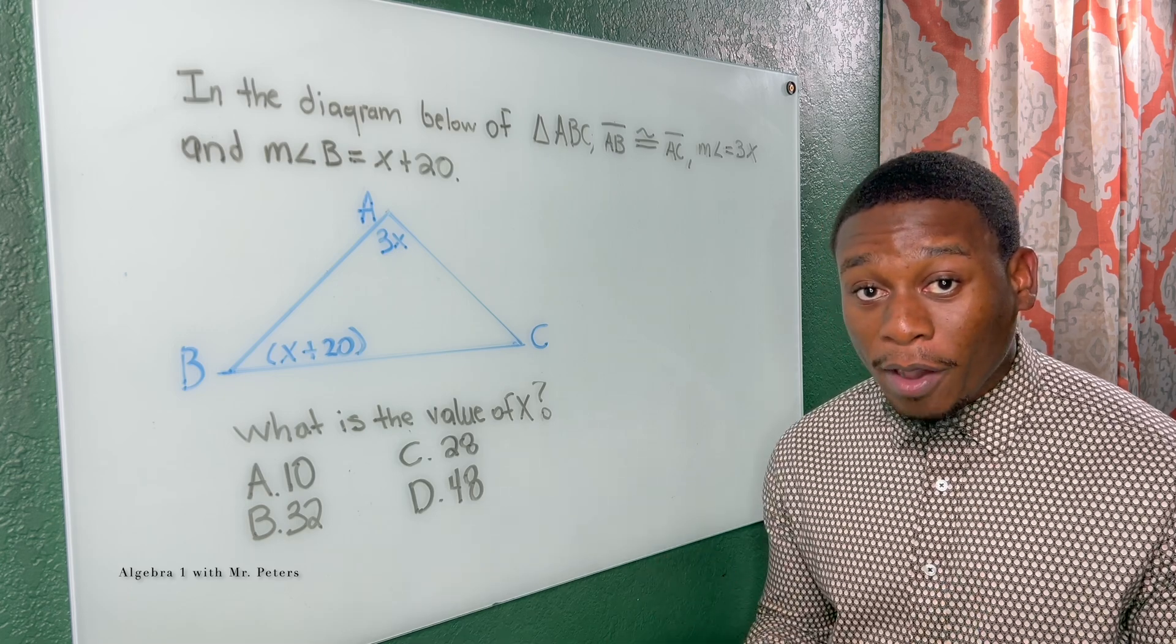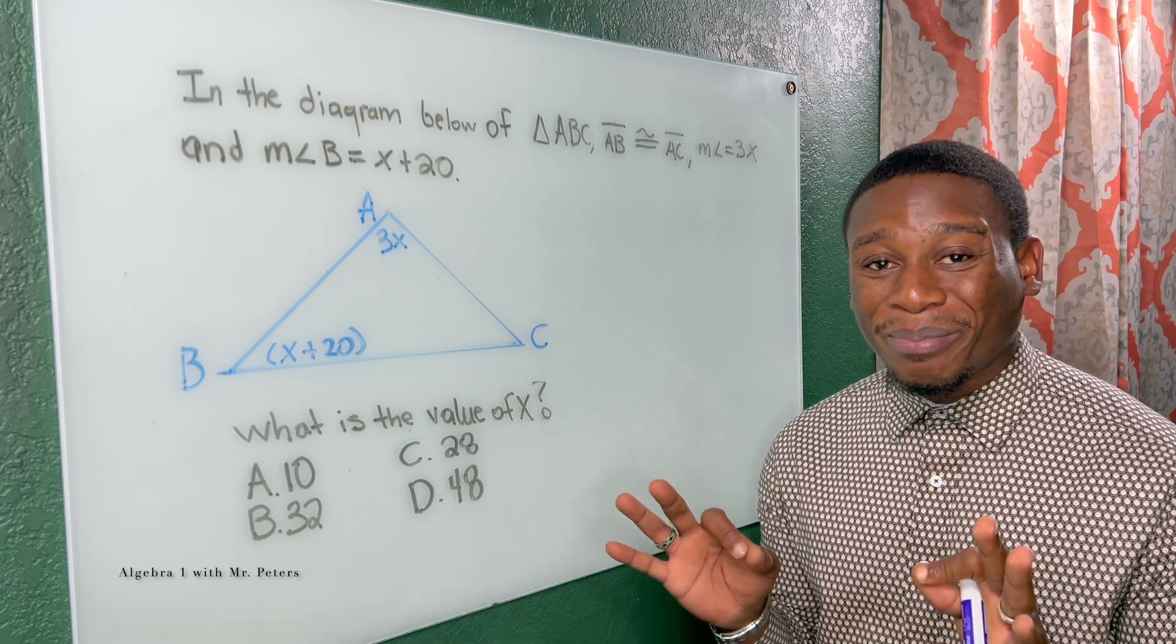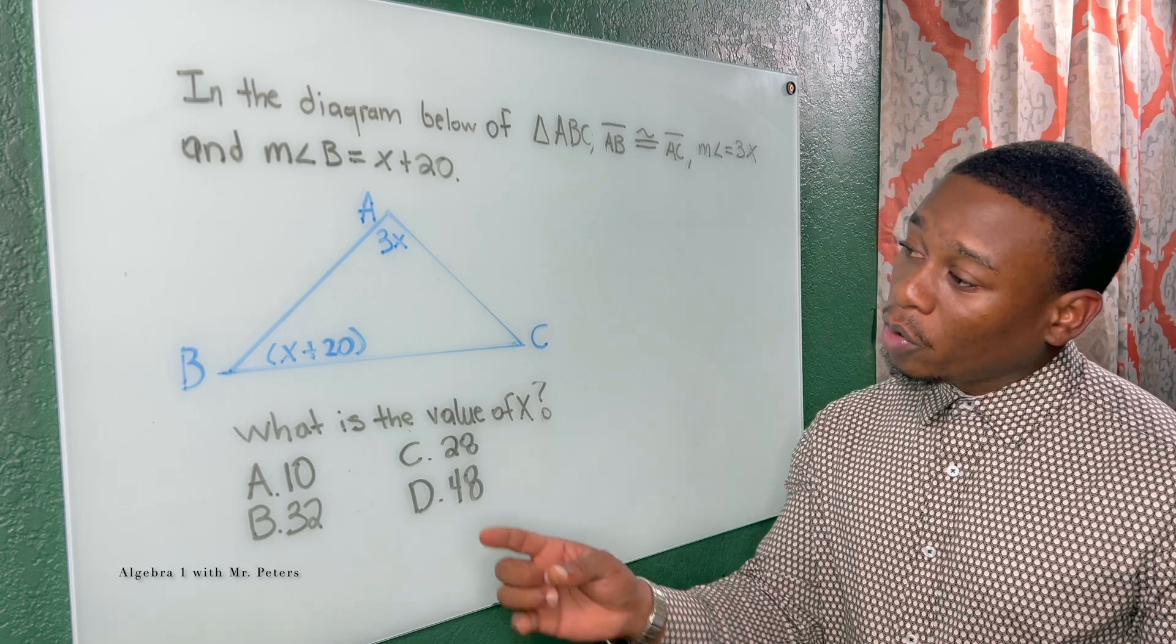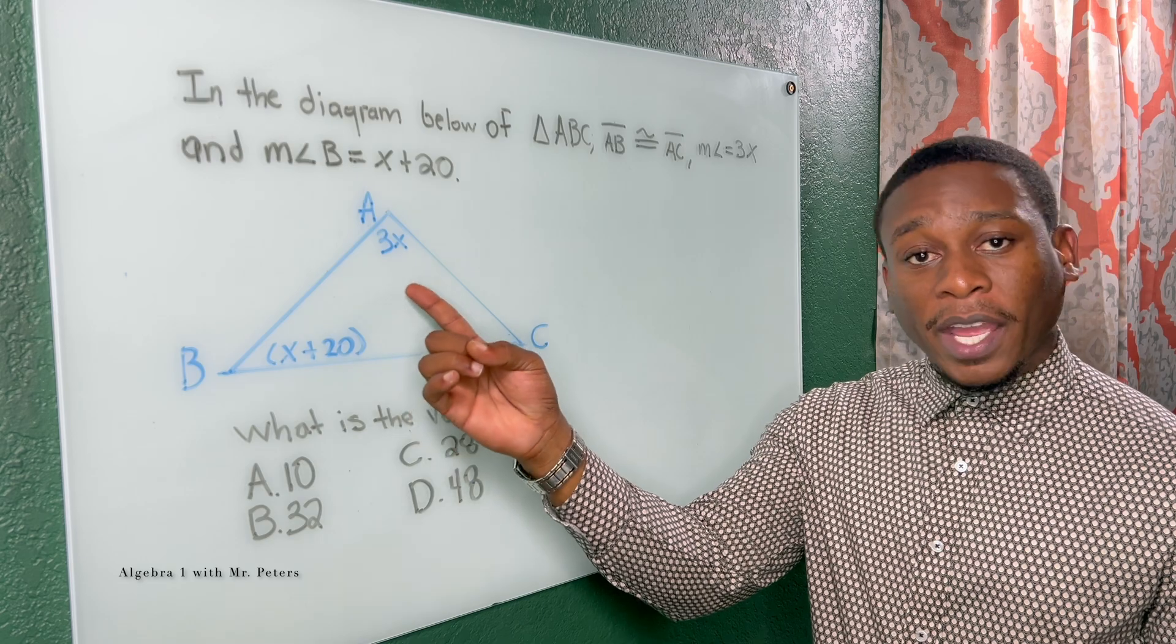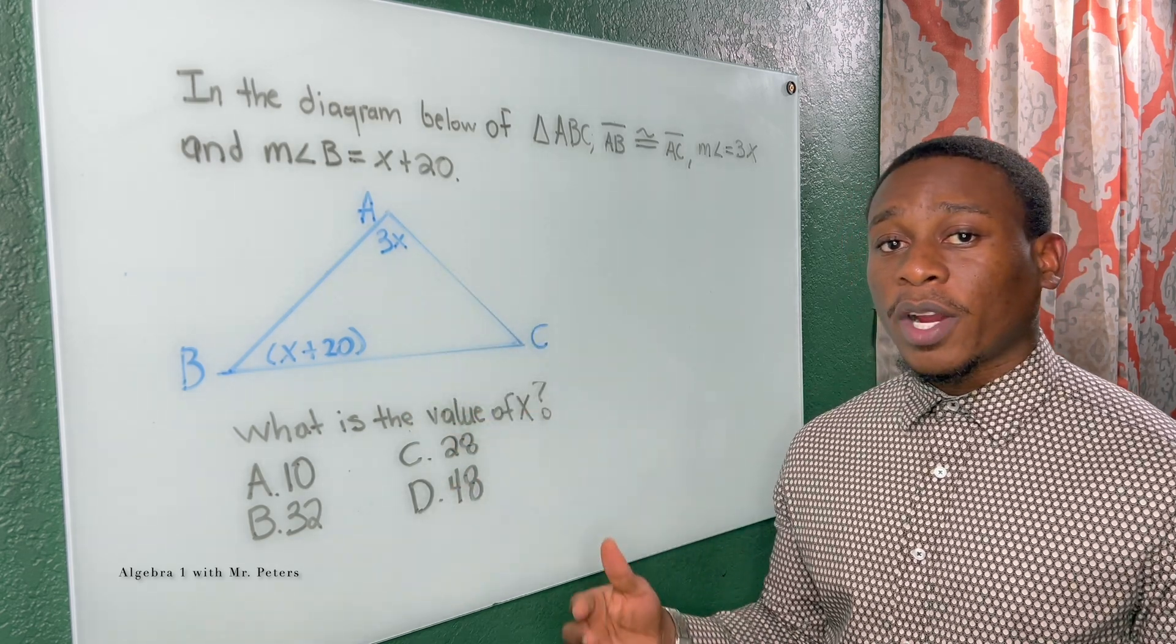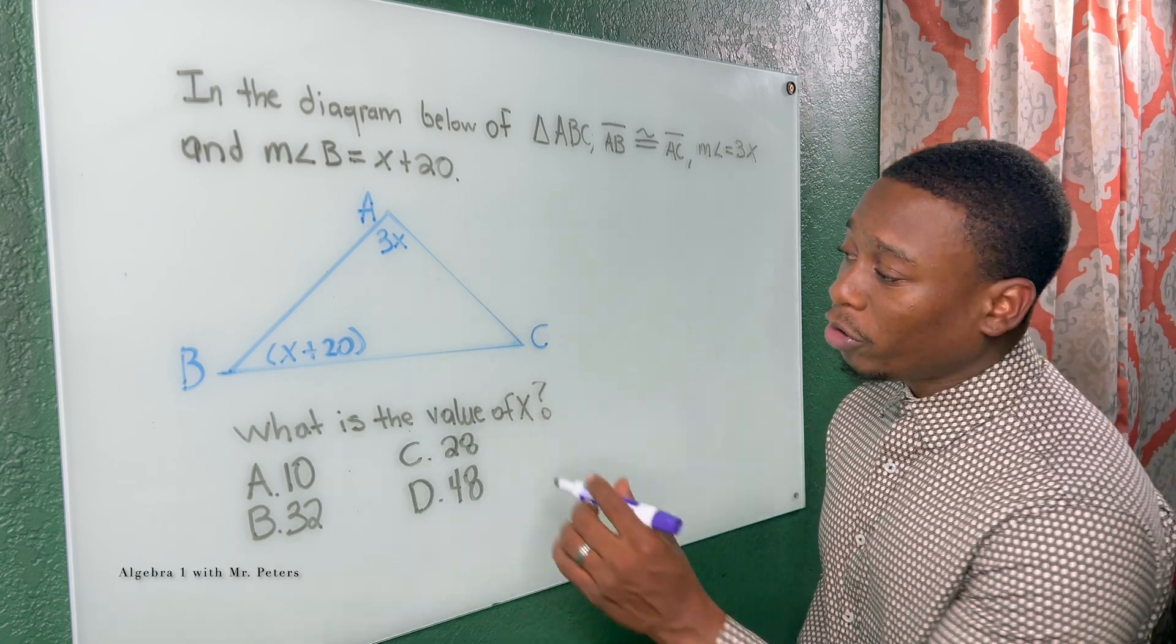I'm going to show you helpful tips to make this an easy process. When we have a problem like this, family, it's a little bit different because we don't have exact measures of the angles, meaning I couldn't just add these two, then subtract it from 180 to find the third side.